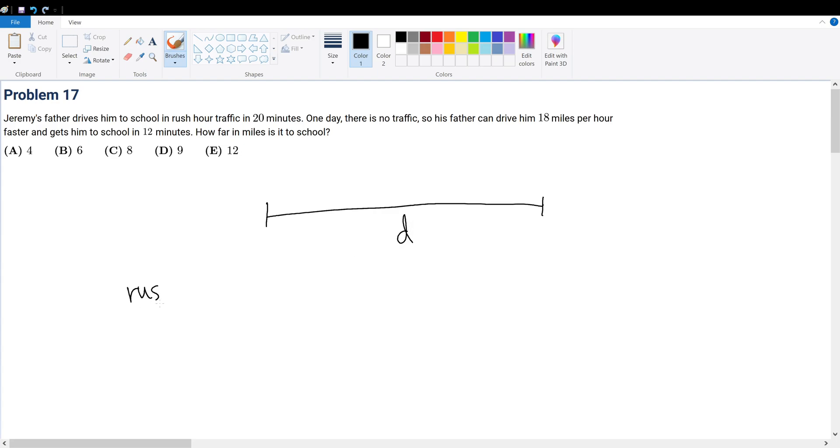So in rush hour, the distance is equal to velocity times time. So the velocity is Vr times 20, and that's in terms of minutes.